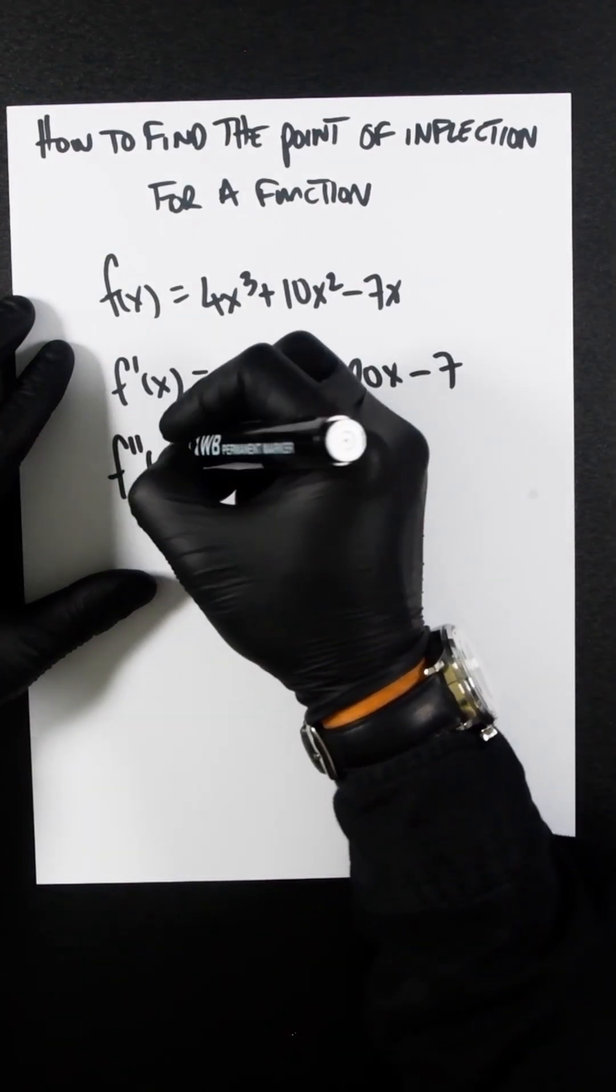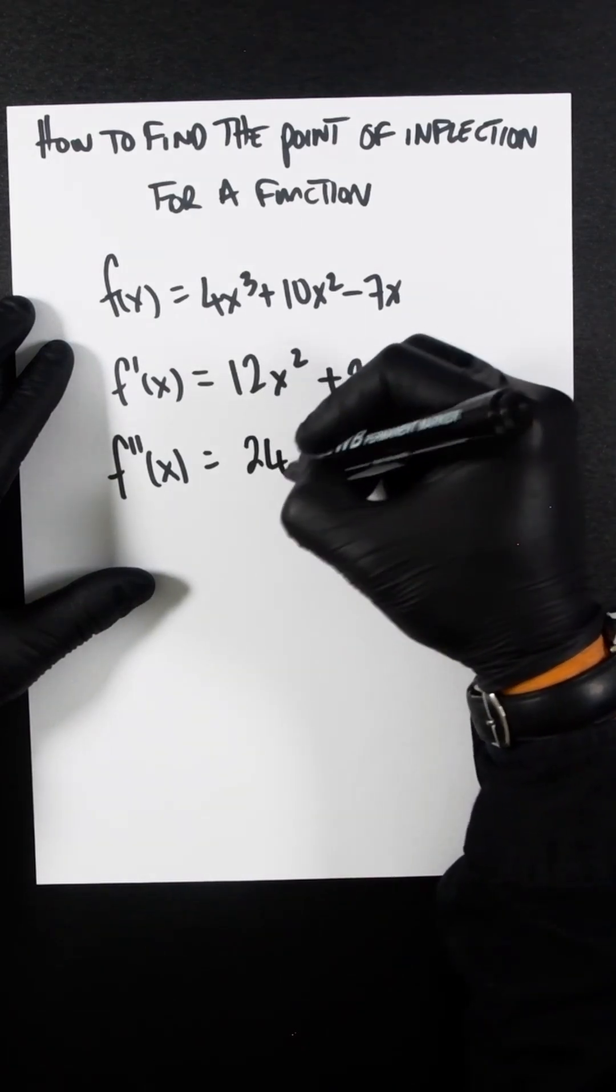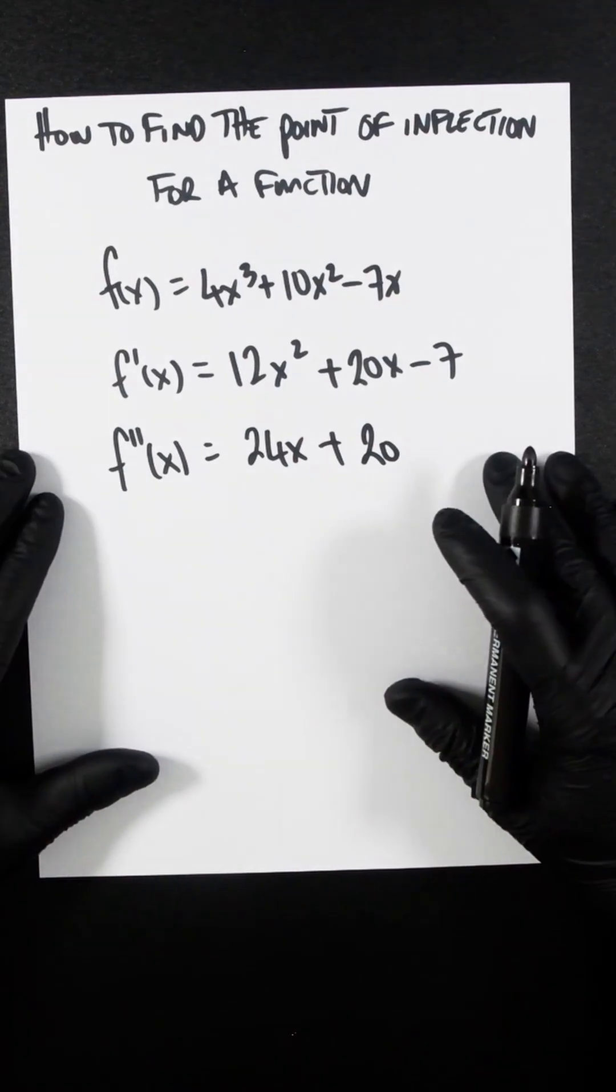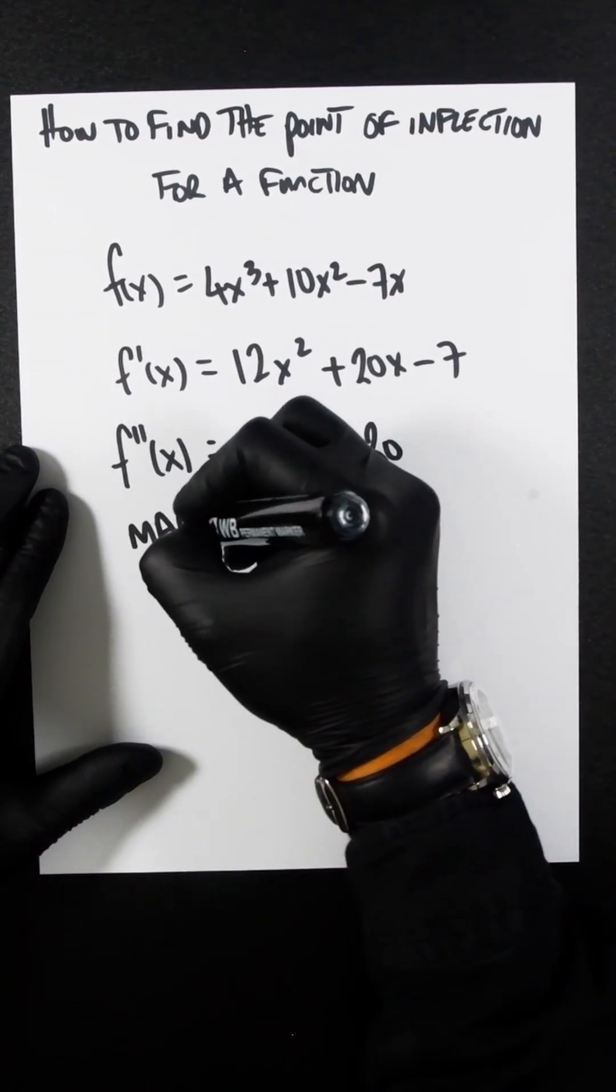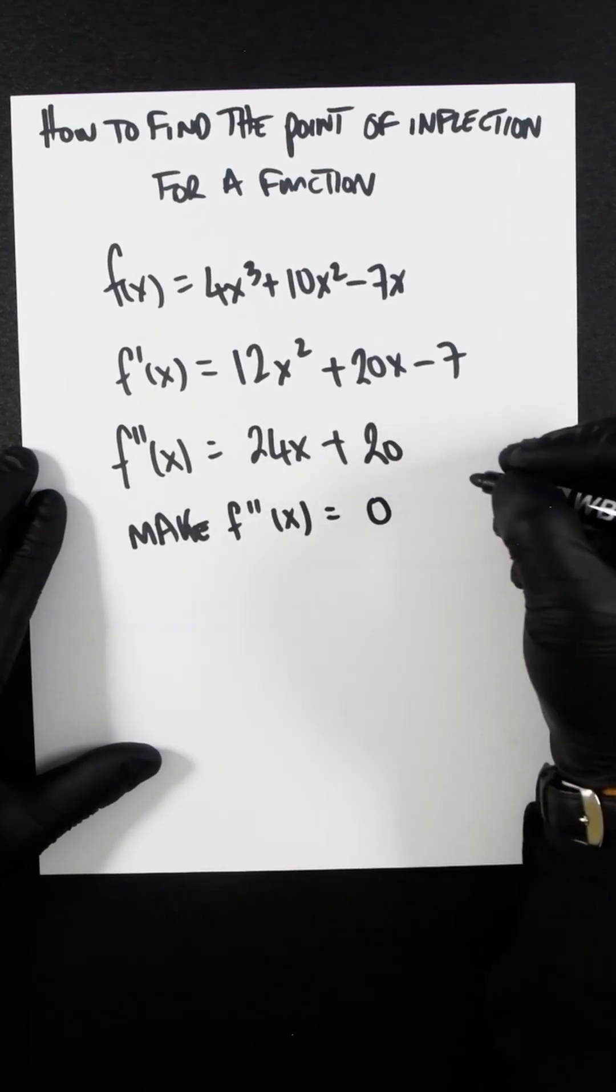Then we differentiate the function again. So let's do that: f''(x) = 24x + 20.